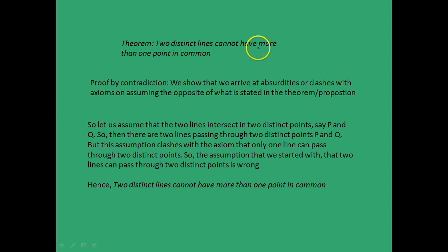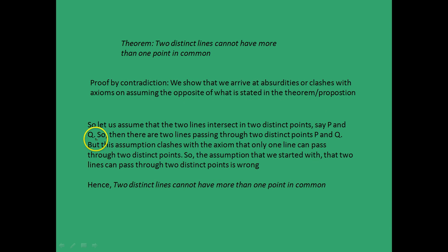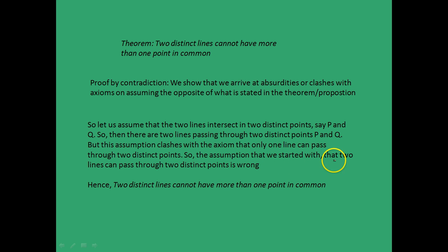There is a theorem which states two distinct lines cannot have more than one point in common. We will prove this by contradiction — we show we arrive at absurdities on assuming the opposite. Assume two lines intersect in two distinct points P and Q, meaning two lines pass through P and Q. But this assumption clashes with the axiom that only one line can pass through two distinct points. Therefore, the assumption is wrong, and two distinct lines cannot have more than one point in common. This is proof by contradiction and shows how axioms are used to prove theorems.